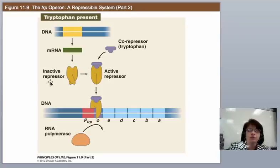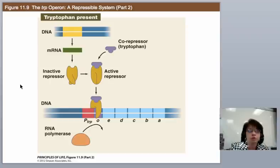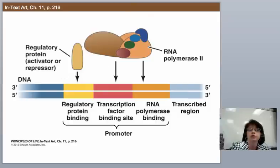We have a worksheet so you can read about this, think about it, look at some animations, and work through it. If you think about what these genes are doing and why they're there, you can understand the difference between the repressible system for tryptophan and the inducible system for lactose. This will be the beginning of the next section, where we talk about eukaryotic gene expression — so tune in for that next.